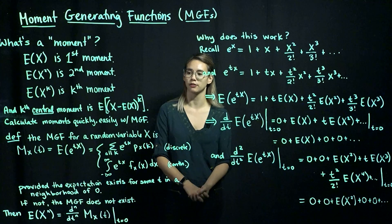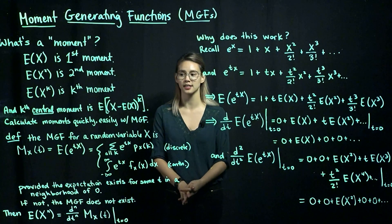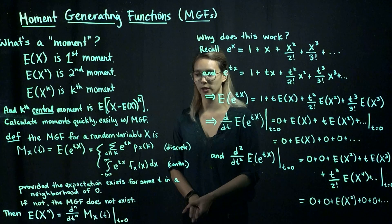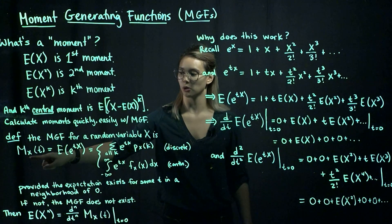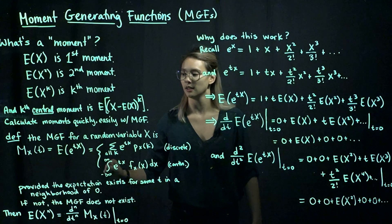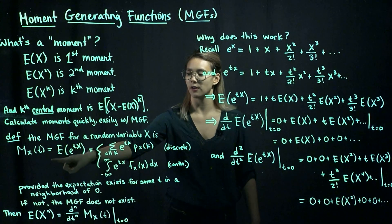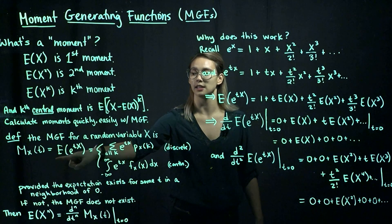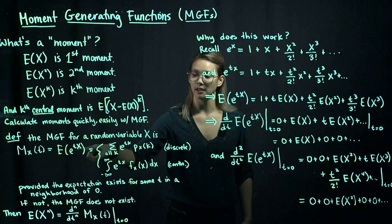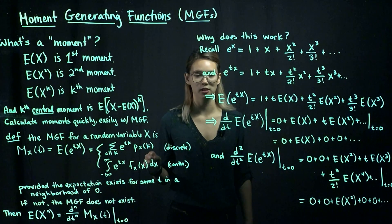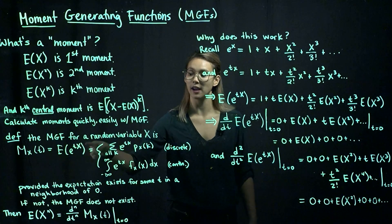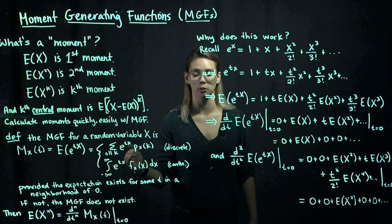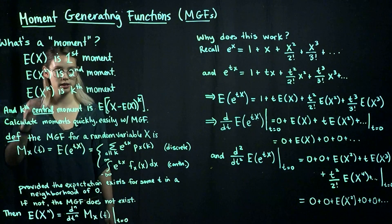So let's define an MGF. If we have a random variable x, then the moment generating function for that random variable is denoted by capital M with subscript x, and then parentheses t. That's how we denote the MGF, and how we calculate it is it's the expected value of e to the tx.